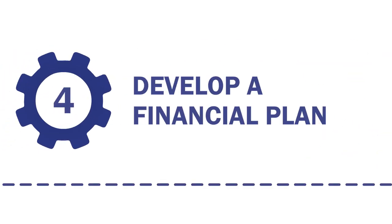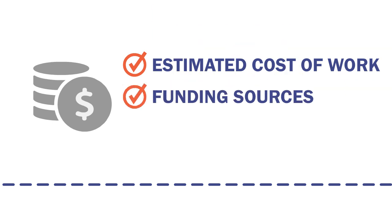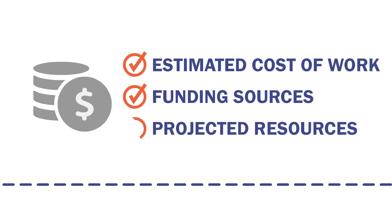4. Develop a financial plan that identifies annual costs, covering at least a 10-year period. This plan must identify the estimated cost of work to implement investment strategies in the TAMP, anticipated funding sources, and present a state DOT's estimate of projected available financial resources. This financial plan must also include an estimate of the value of these assets and the needed annual investments to maintain the value. A financial plan highlights how resources are expected to be allocated based on asset strategies, needs, shortfalls, and agency policies.